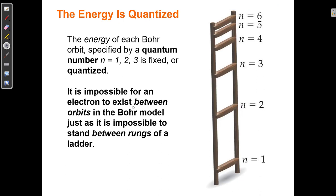Bohr suggested that instead of the electron being able to have any possible energy value, the energy of an electron was more like a ladder. The electron could be at the bottom rung, or at the second rung, but the electron could not have the energy in between. That spiral model assumed the electron can get a little bit closer and a little bit closer to the nucleus — but Bohr said that's not possible.